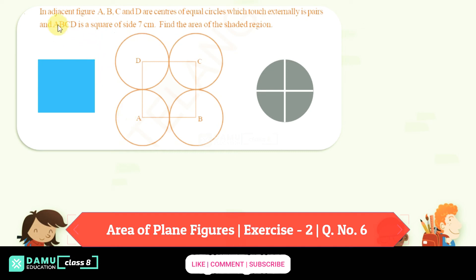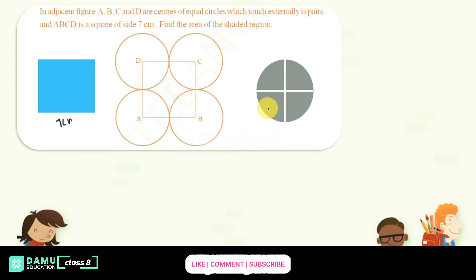In this problem, we are going to discuss an adjacent figure ABCD. The centers of the equal circles which touch externally form a square ABCD. The side given is 7 centimeters, so all sides of ABCD will be 7 centimeters.